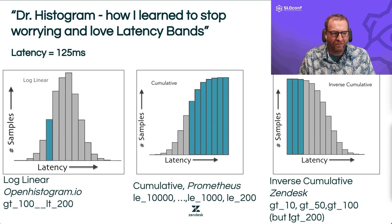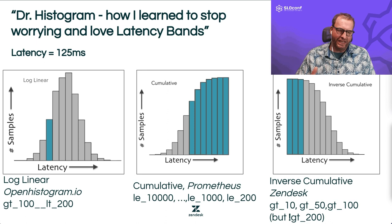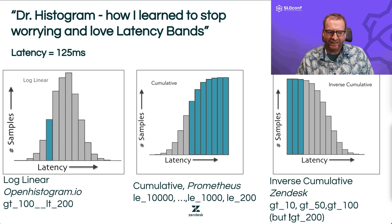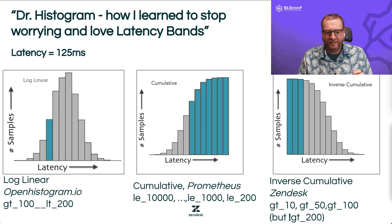I gave a talk titled "Dr. Histogram: How I Learned to Stop Worrying and Love Latency Bands." It shows three different types of histograms. On the left, we have openhistogram, which is a log-linear histogram. If I've got a latency of 125 milliseconds, I choose that blue bar, which says this was greater than 100 but less than 200 milliseconds. There's also the cumulative histogram used in Prometheus — for 125 milliseconds it specifies metric tags like less than infinity, less than 1,000, less than 200.